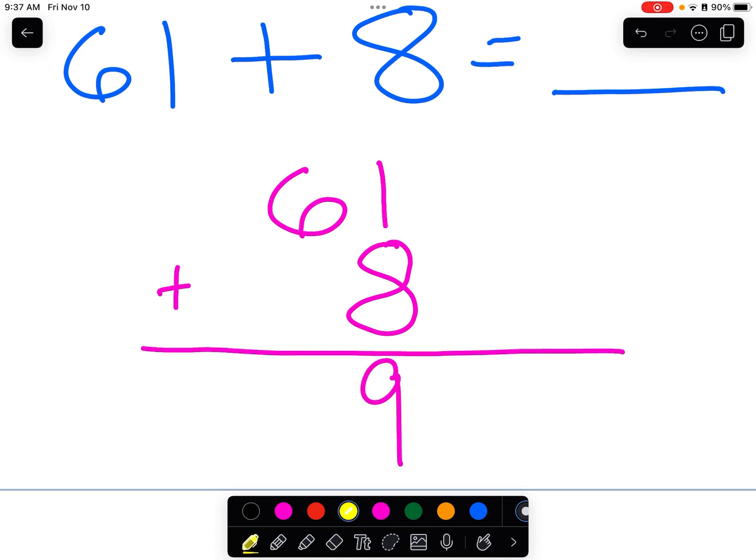And then we're going to move to this part, the tens place. And as we talked about, we have to imagine that there's a zero there. And six plus nothing, or six plus the imaginary zero, is going to be six. So, the answer is 69. Our answer is 69.